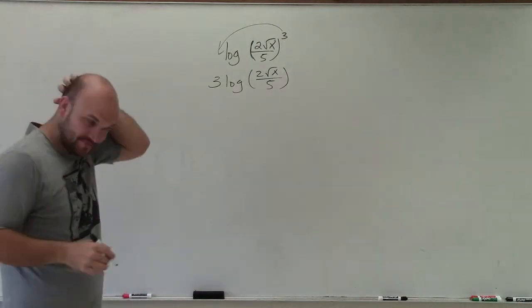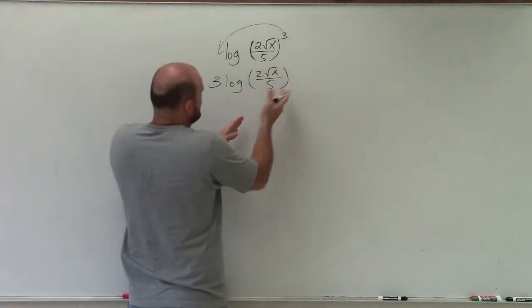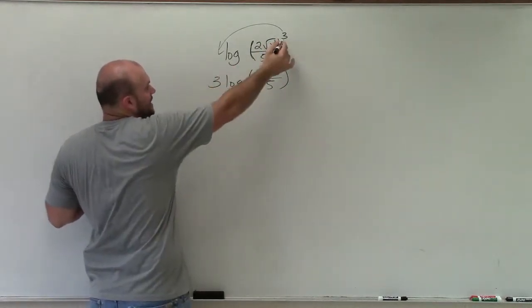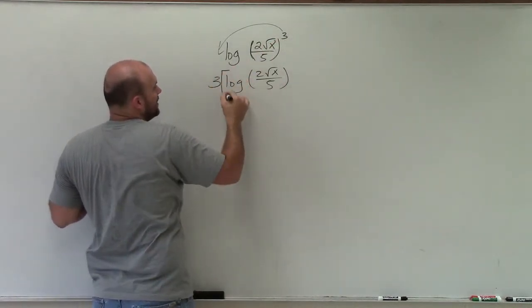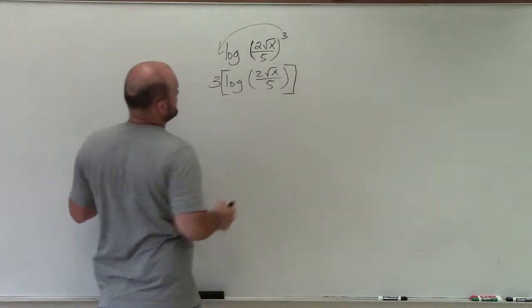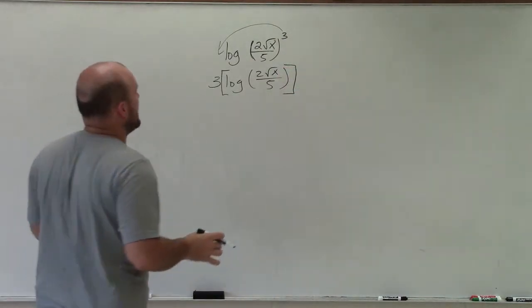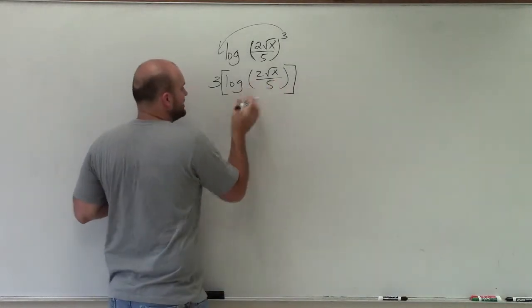Now when looking at this, we have our properties of logarithms, right? But each one of these properties of logarithms is always going to be raised to that power of 3. So what I'm going to do now is introduce my brackets. I'm going to keep that 3 outside, and now just apply my properties of logarithms inside the bracket.